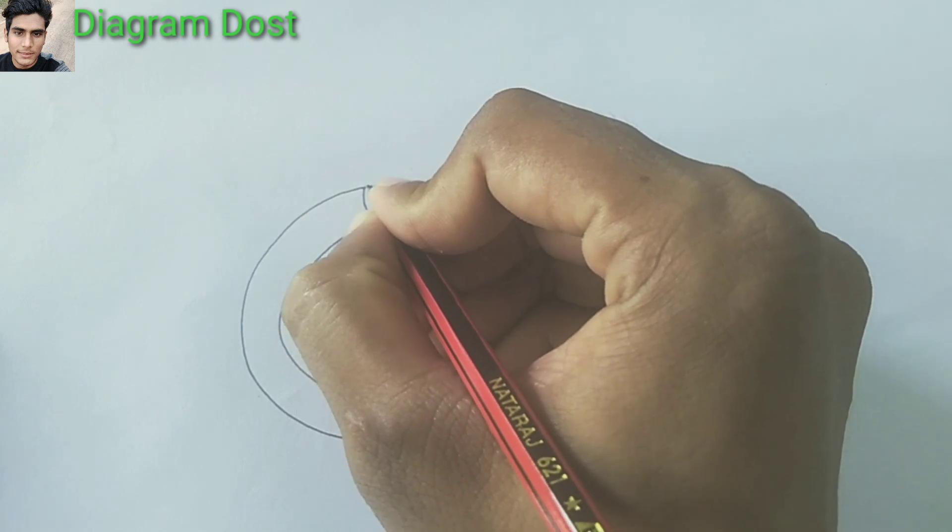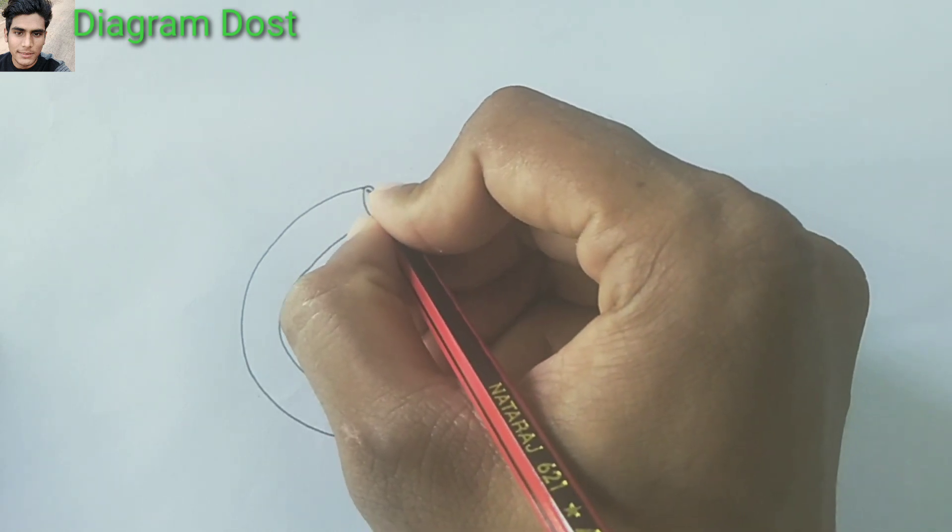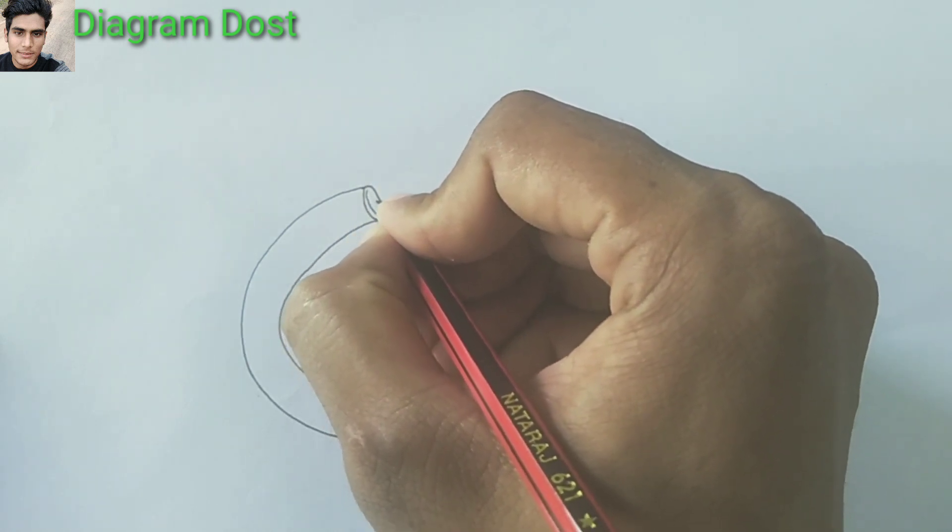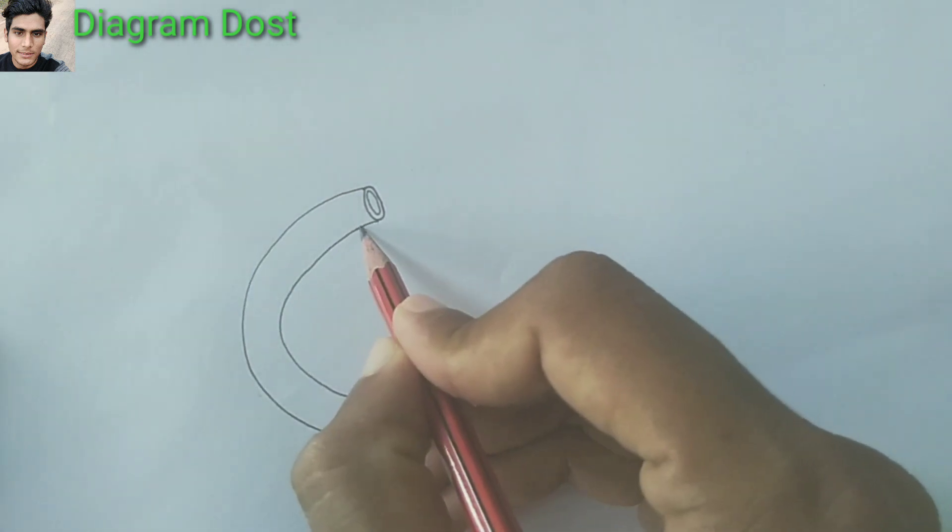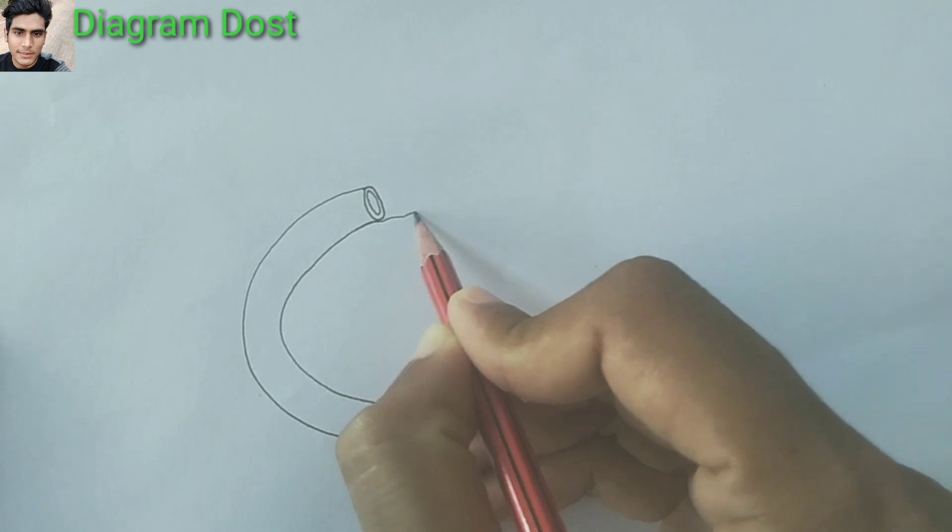Make this circle, one more circle, insert that, yes, one more circle. Now I am drawing the pancreas.